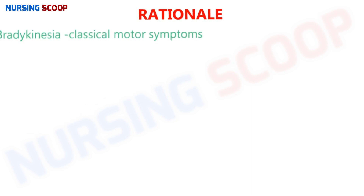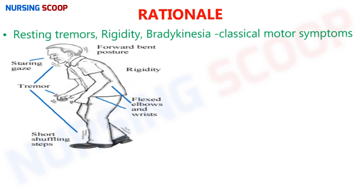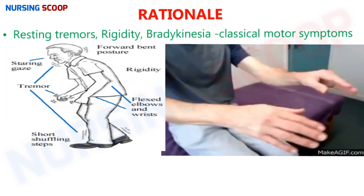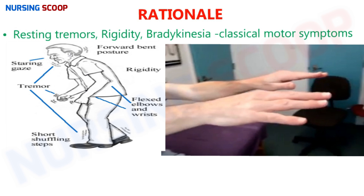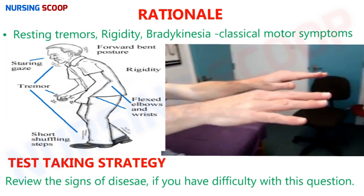Rationale: Resting tremors, rigidity, and bradykinesia are the three classical motor symptoms of Parkinson's disease. Resting tremors occur when the hands are resting on the lap — when the muscles are relaxed, the tremors are produced. Test-taking strategy: review the signs and symptoms of the disease, which will help you in selecting the correct options.